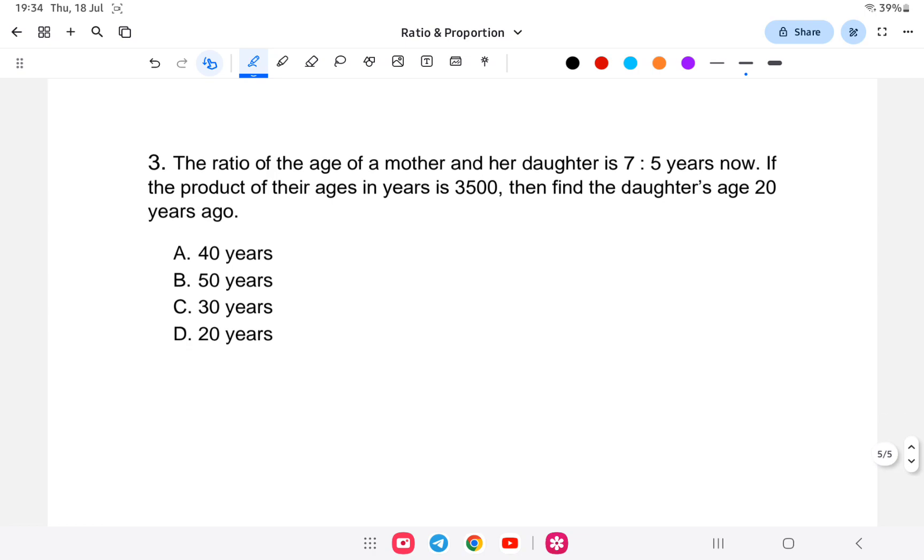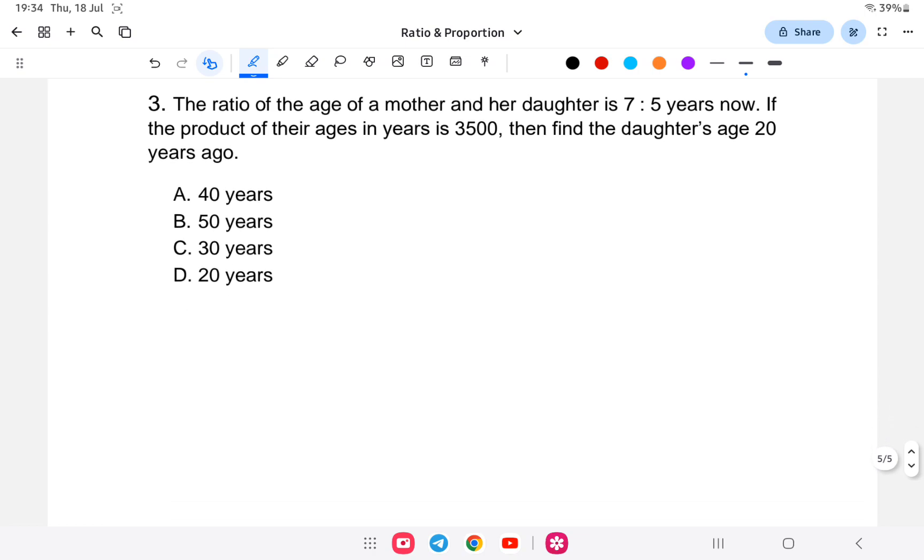Let us go to the next question. The ratio of the age of a mother and her daughter is 7:5. If the product of their ages in years is 3500, then find the daughter's age 20 years ago.